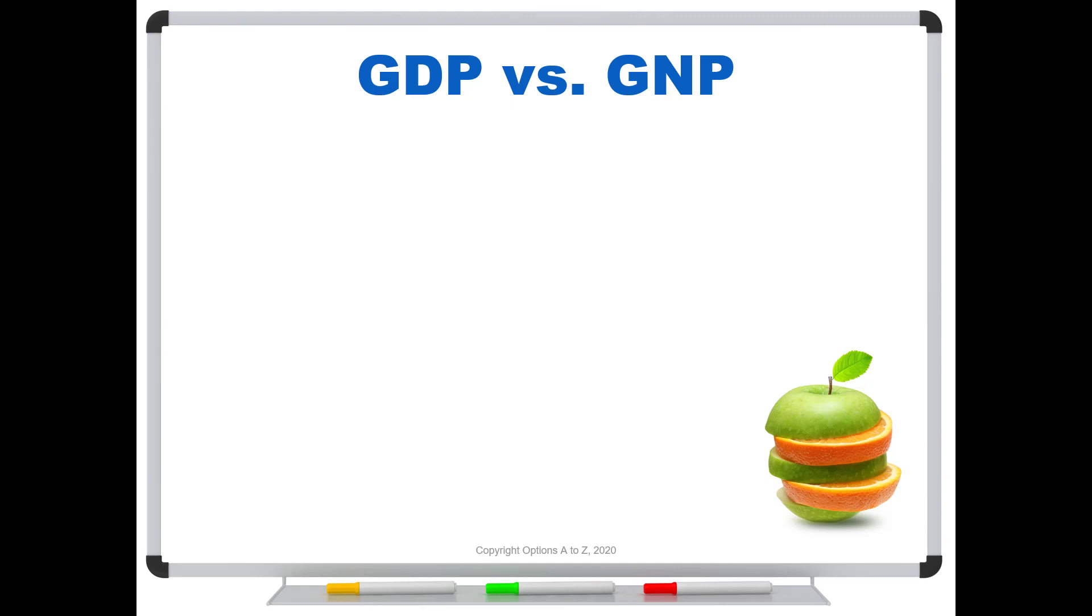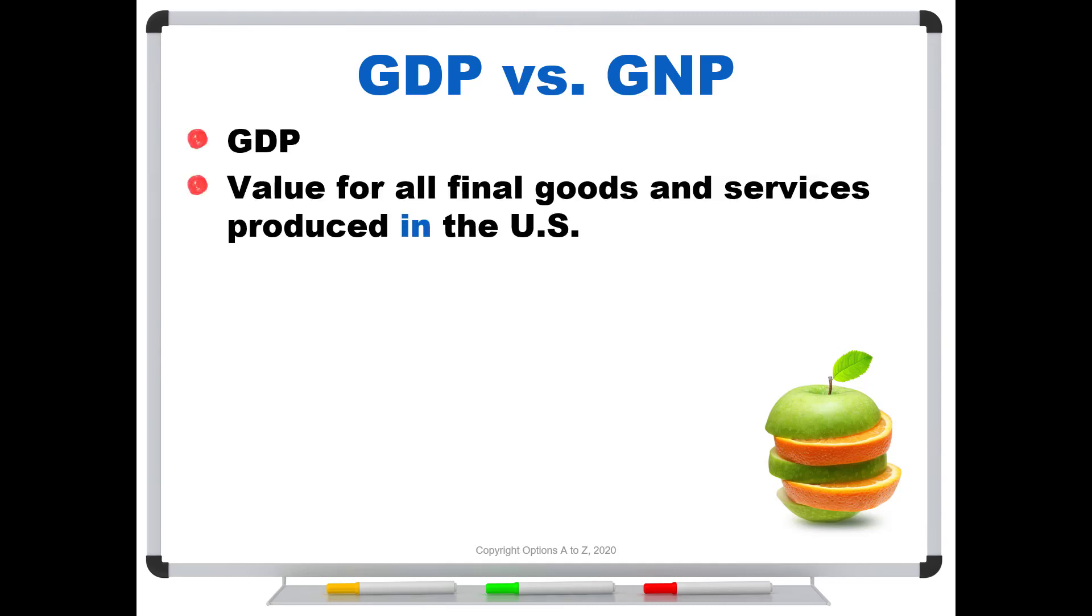Well, previously I mentioned that there is another related measure called GNP. So what's the difference here? Well, let's start with GDP. GDP is the value for all final goods and services produced in the US. Or you could say the value added for all goods and services. But the key word here is in. It has to be within the borders of the US.